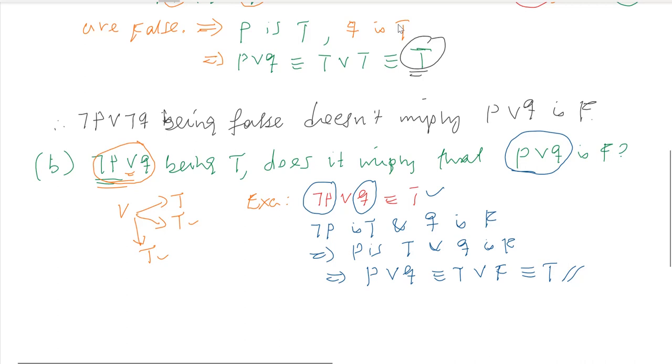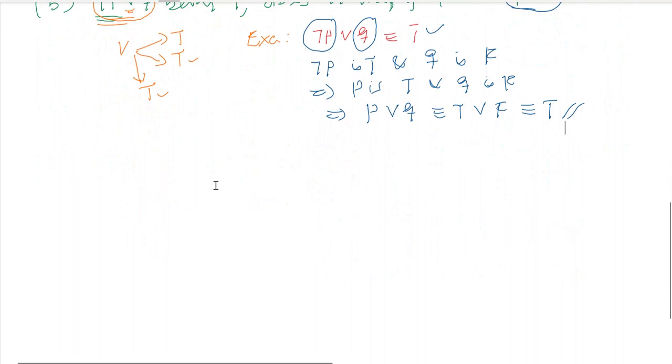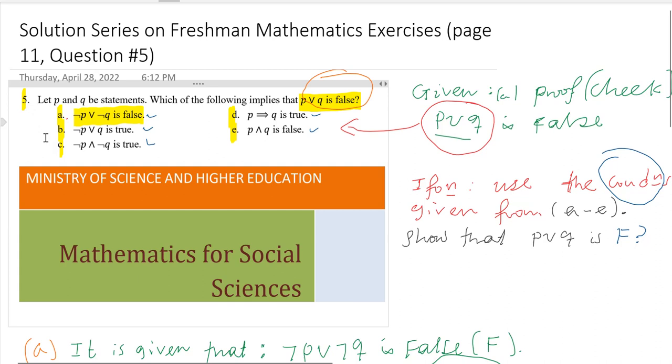This counterexample shows that whenever negation of P or Q is true, it does not necessarily imply P or Q is false. There may be cases where it is false, but we cannot generalize. So part B does not imply the result.